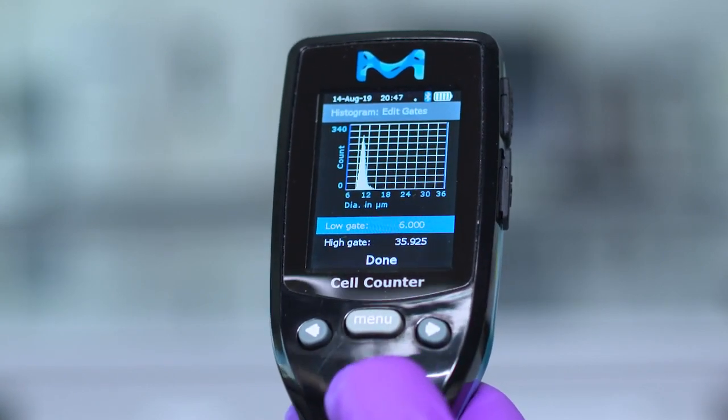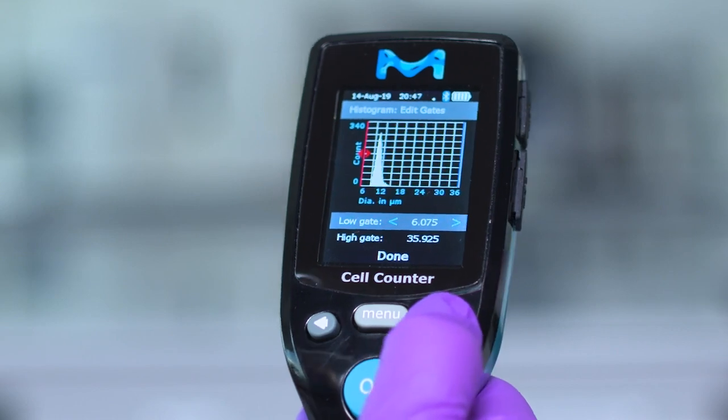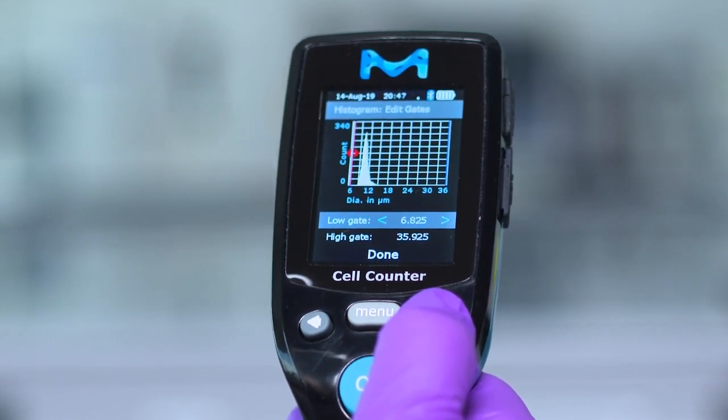Press OK to highlight the low gate and increase or decrease the gate with left and right arrows on the SEPTOR device and press OK.